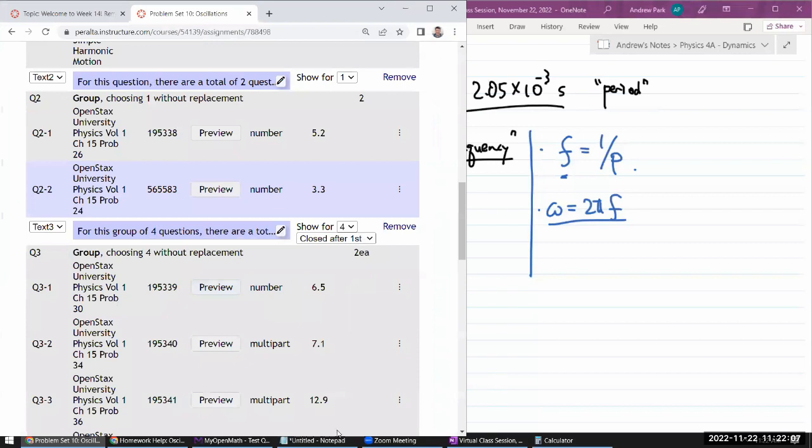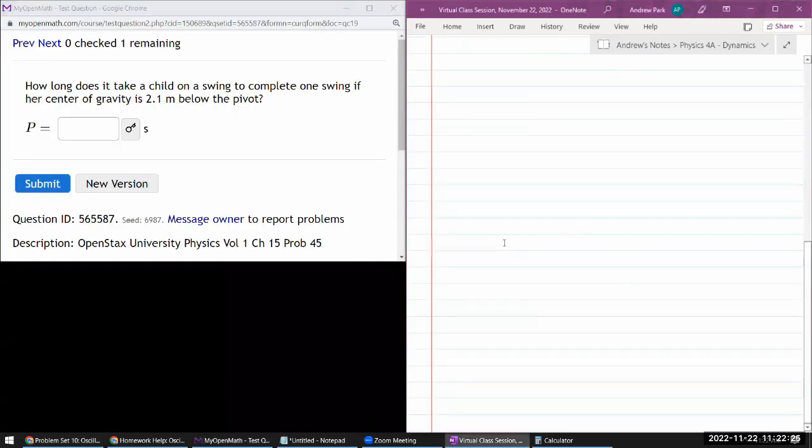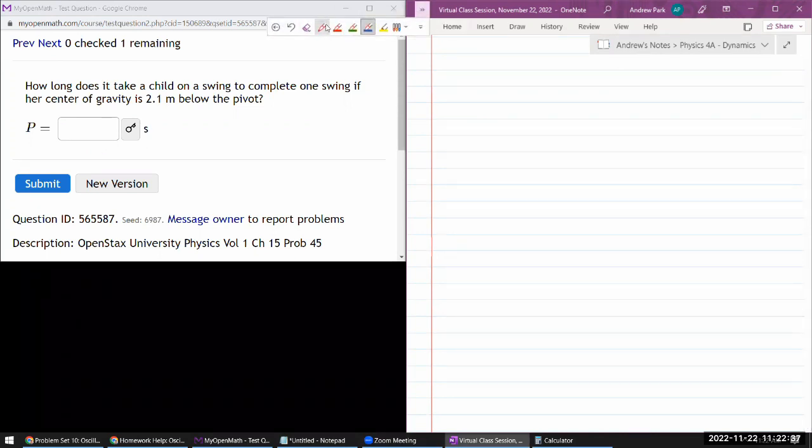Okay, let's look at the other question. It asks how long does it take a child on a swing to complete one swing if her center of gravity is 2.1 meters below the pivot. Let me just draw a picture to have the right mental image.